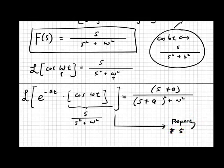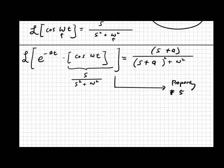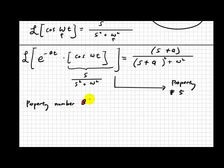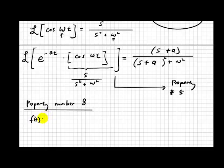We can also talk about another example using property number 8, which is about division by t. Let's start with property number 8. Say we have a function f(t) equal to t times e to the power of minus At.